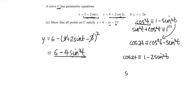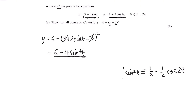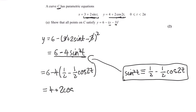Rearranging that, we get sine squared t equals a half minus a half of cos 2t. So if we just use this identity and plug it straight in, we get 6 minus 4 lots of this. Expanding that out, we get 6 minus 2, so 4, and then plus 2 cos 2t. And that is indeed equal to y, so that is proven — we have just shown what we wanted.